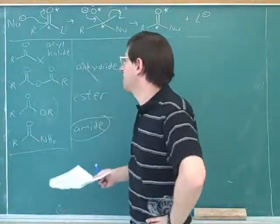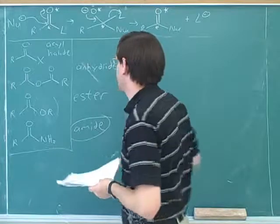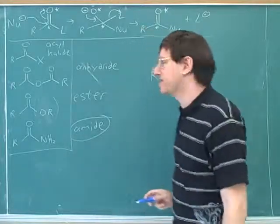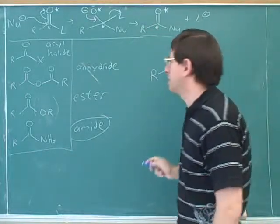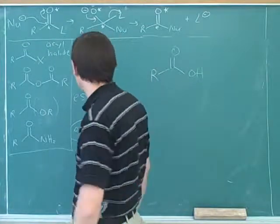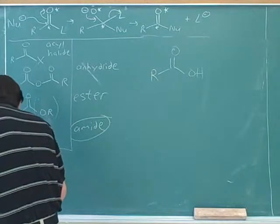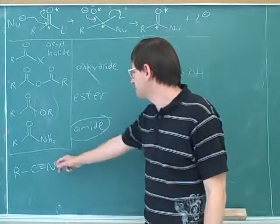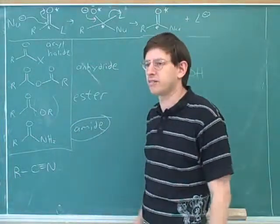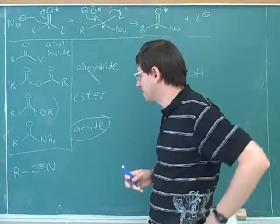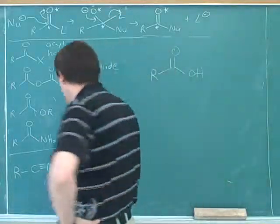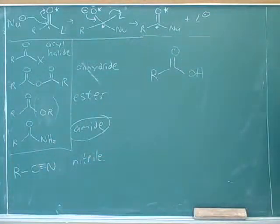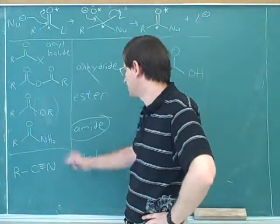Now remember that all of these are considered carboxylic acid derivatives. You can see why, because they're all similar to a carboxylic acid, except that instead of having an OH connected to the carbonyl, they have some other leaving group connected to the carbonyl. There's one other type of carboxylic acid derivative that doesn't look the same as the others. It's still considered a carboxylic acid derivative. This is called a nitrile.